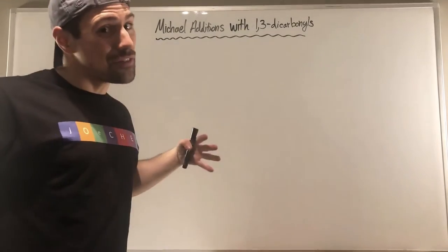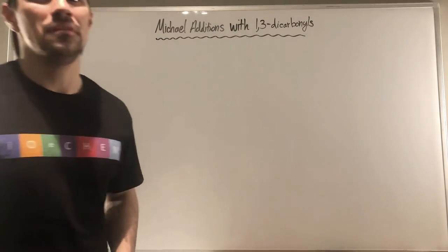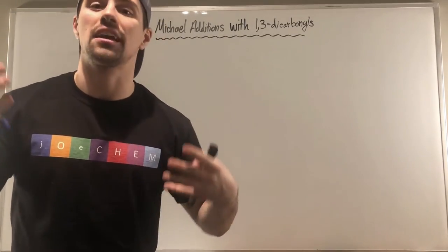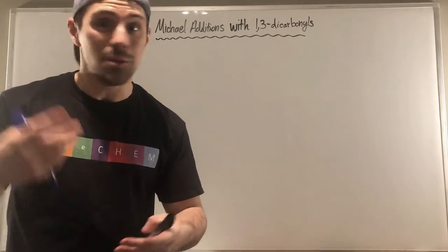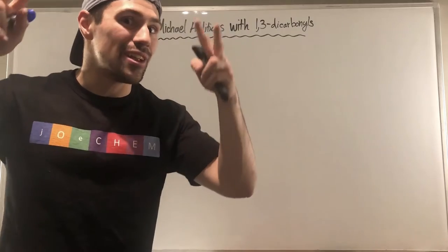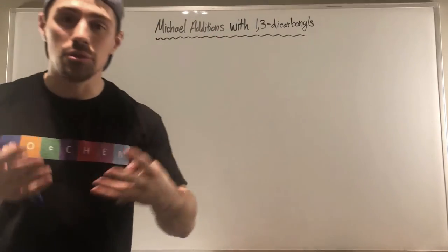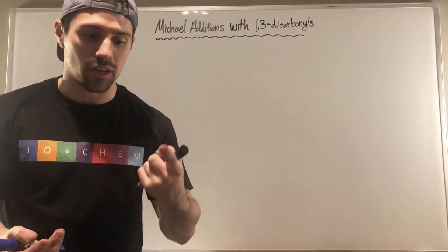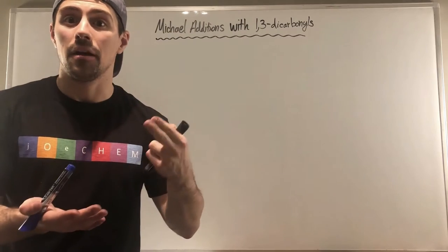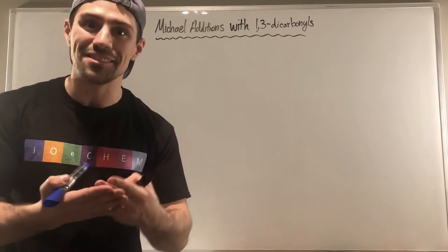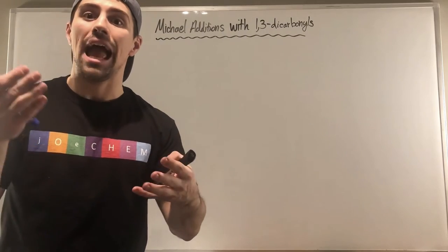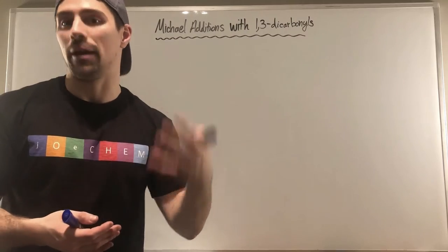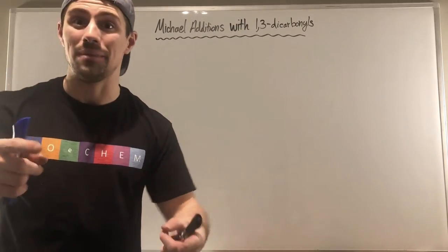Hey gang, welcome back for another video here on Joe Chem. In this section dealing with ester enolates, I know I've sounded like a broken record. In this video, we're not learning anything new. We're basically combining the new concept of 1,3-dicarbonyls — whether two ketones, a beta-keto ester, or a diester — and then doing something we've already learned with it. In this video, I want to talk about Michael additions. They're back — we're bringing them back.